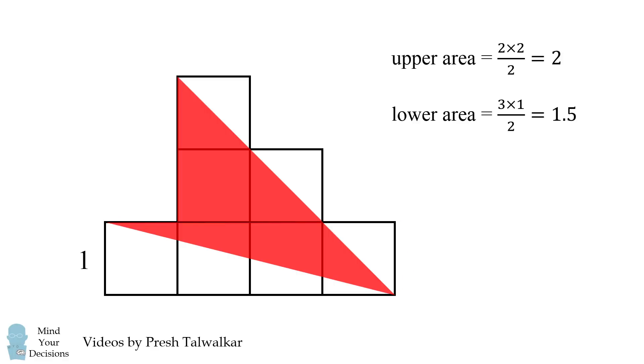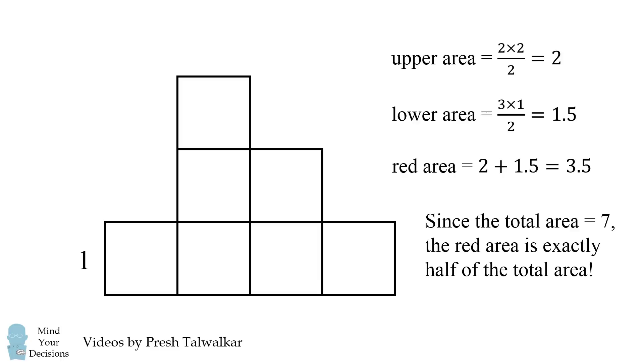The red shape is equal to the area of these two triangles, so its area will be equal to 3.5. And that's the answer. Now just as a little bit of fun trivia, the entire shape has a total area of 7, hence the red area is exactly half of the total area.